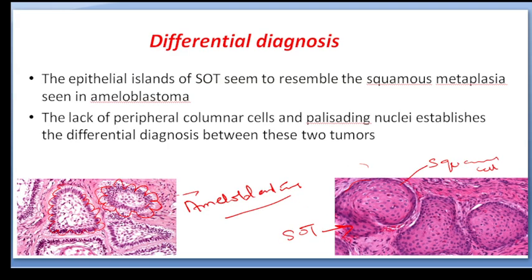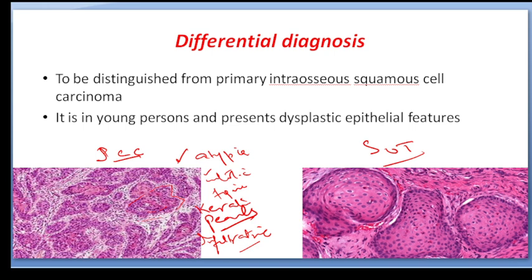We have to differentiate this tumor from ameloblastoma, particularly acanthomatous ameloblastoma. The lack of peripheral columnar cells with palisaded nuclei establishes the differential diagnosis between the two tumors. The primary distinction is also from primary intraosseous squamous cell carcinoma.